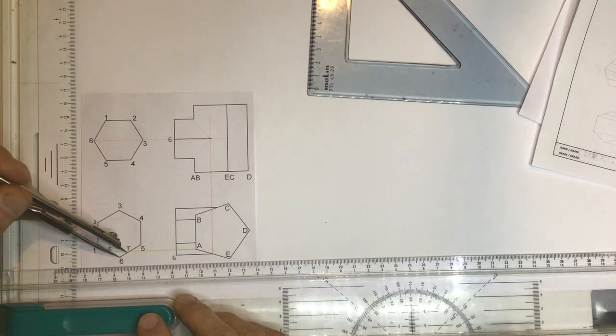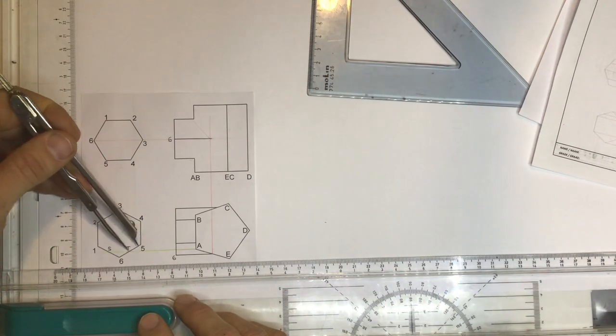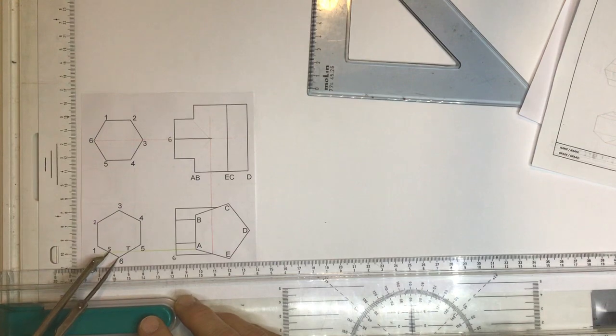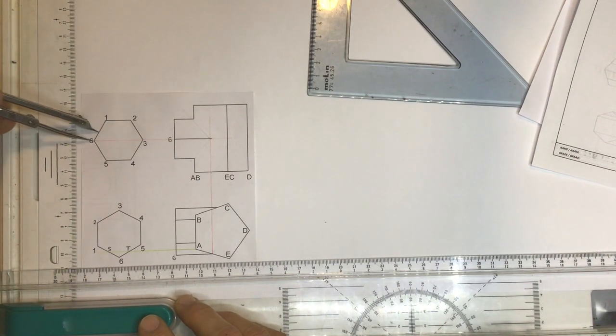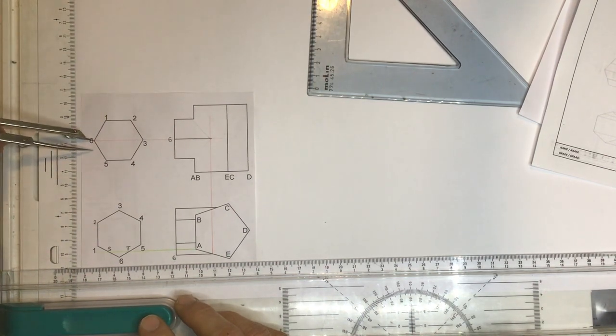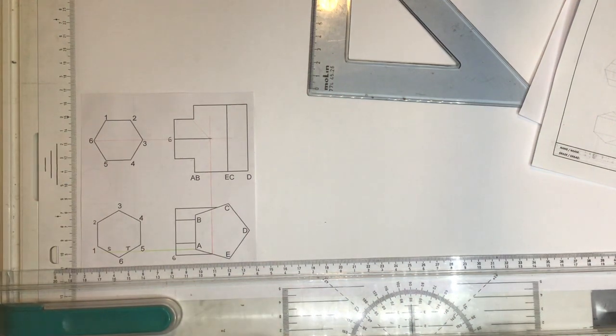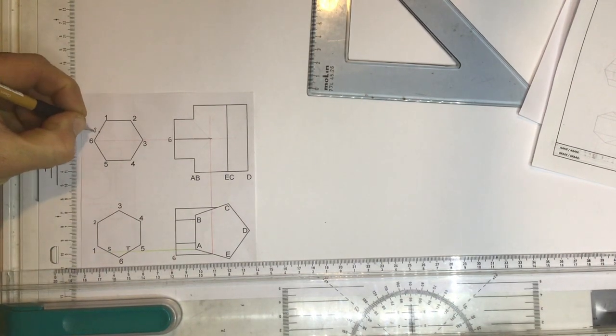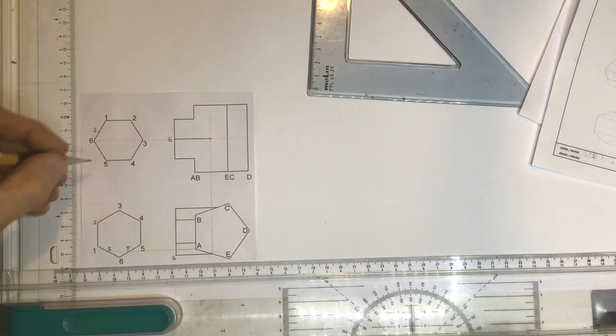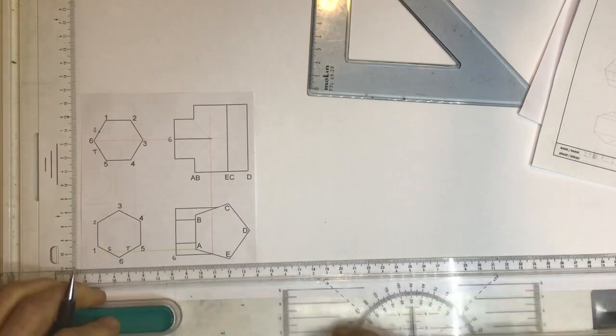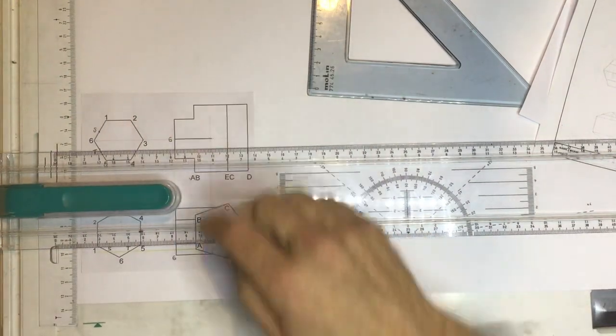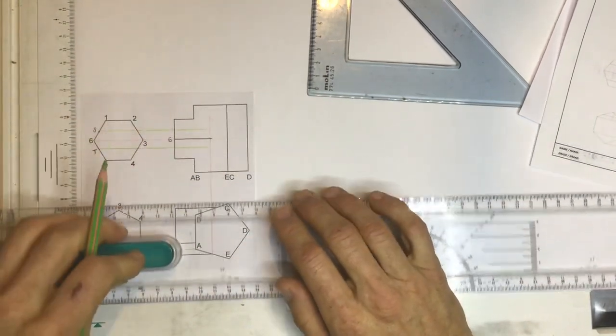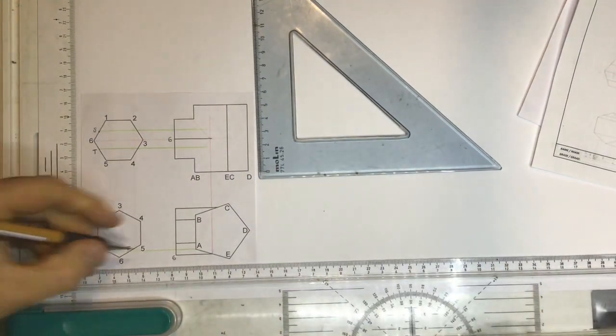I'm going to take some construction lines across here from A and through this auxiliary view. What I need to do is to find those two points S and T on this auxiliary view over here. I've got a distance from 6 to T and you'll note that it's not exactly in the middle - it's much closer to 6 than it is to 5. So from 6 to T and same distance over here from 6 to S. So I find 6 up here and I mark off that distance over there and that distance over there.